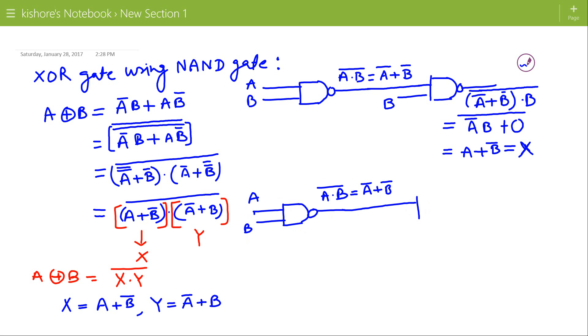This output goes to another NAND gate and second input to this NAND gate is now A. So the output is A bar plus B bar NAND A which is A into A bar is 0 plus A B bar and that is A bar plus B. That is Y.